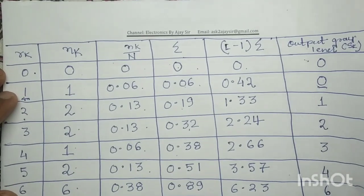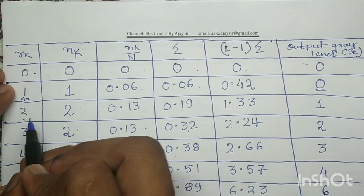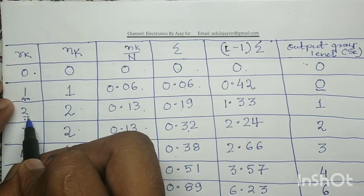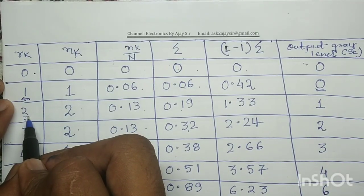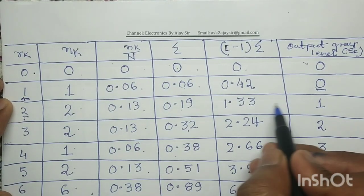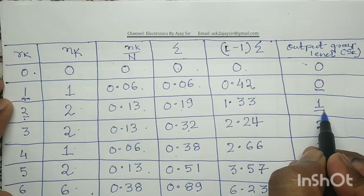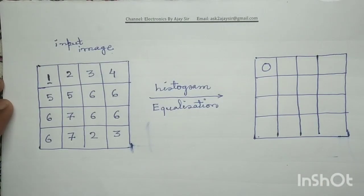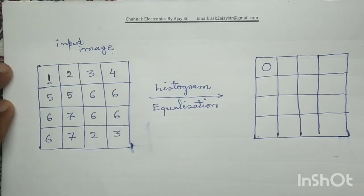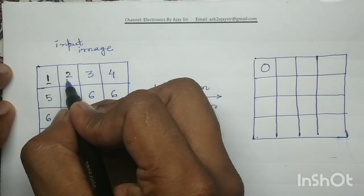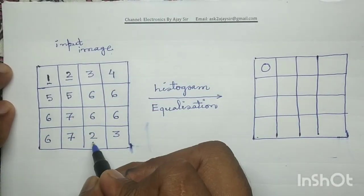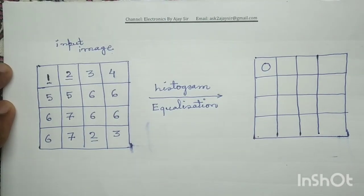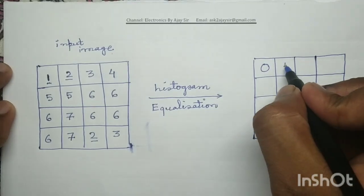For the next gray level 2: if the input gray level is 2, in the output image it is mapped with output gray level 1. In the input image, gray level 2 occurs at 2 places. In the output image, those positions are mapped with output gray level 1.